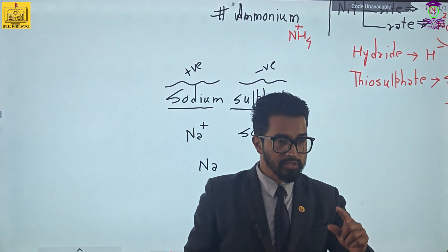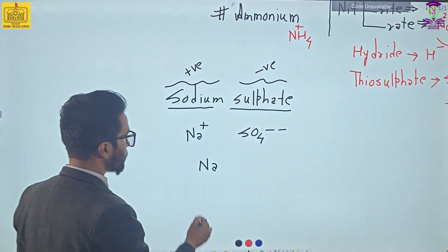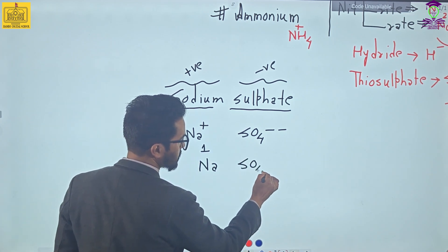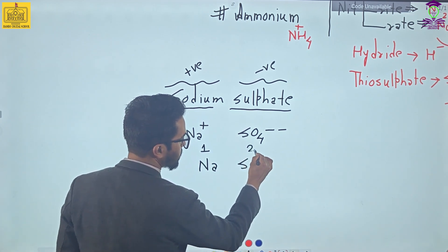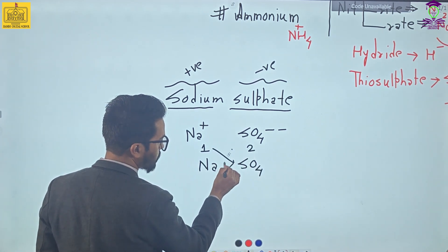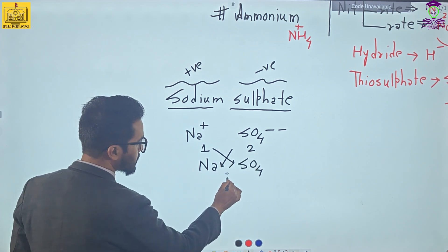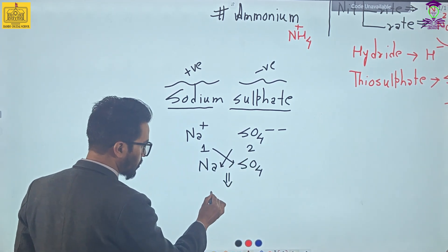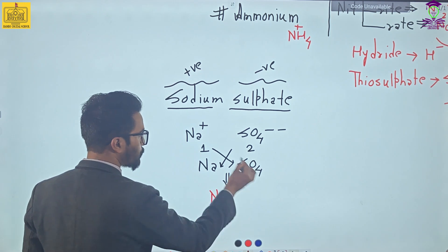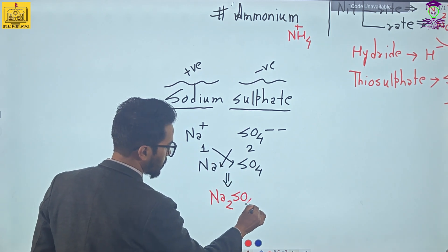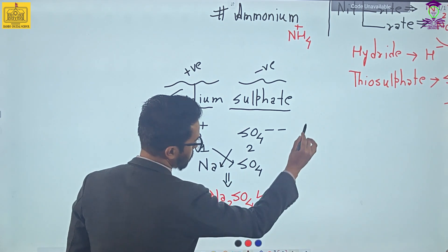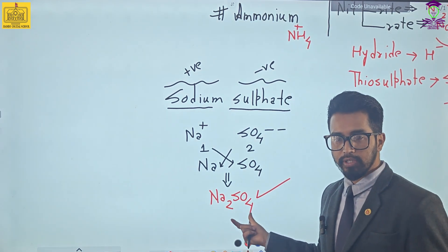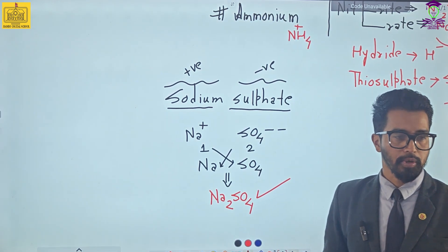Charge determines valency. Na has one charge, so valency is 1. SO4 has two charges, so valency is 2. Now you have to criss-cross — exchange the valency. Your new compound will be Na₂SO4. That is, Na multiplied by 2 gives Na₂, and SO4 multiplied by 1 gives SO4. So the formula for sodium sulfate compound is Na₂SO4. In this way we are going to make compounds for potassium, calcium, magnesium, and others as well.